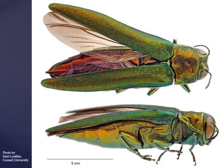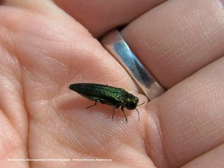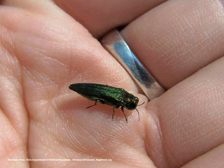So what does the emerald ash borer look like? The adult beetle is only about half an inch long — about the size of a cooked grain of rice. It has a distinct bullet-shaped body, flattened head, and metallic green color. As you can see here, the insect is so tiny, which has played a role in how difficult it has been to detect the insect in our country.